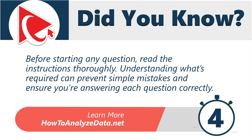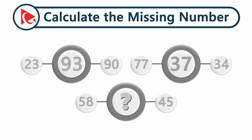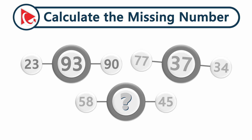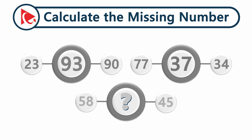You are presented with three shapes. Each shape has three circles connected with a line, and each circle has a number inside. The first shape has numbers 23, 93, and 90. The second shape has numbers 77, 37, and 34. The last third shape has numbers 58 and 45, and the number in the middle is missing. Your goal is to calculate the missing number and select one out of four possible choices.